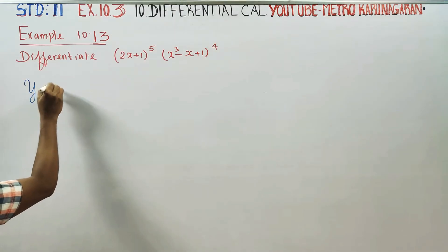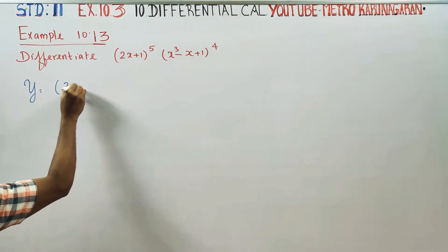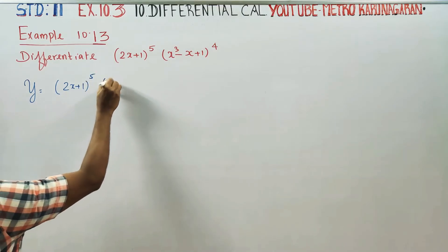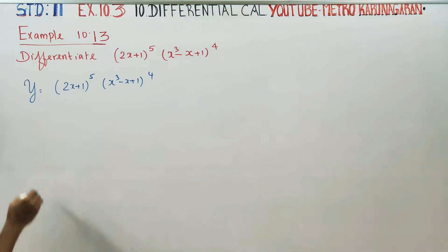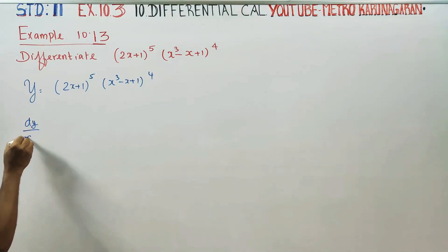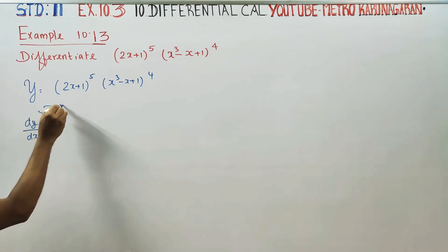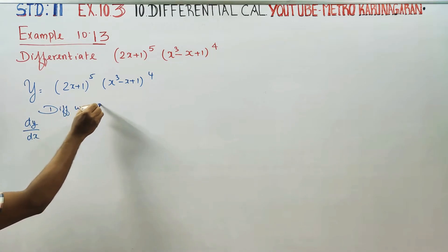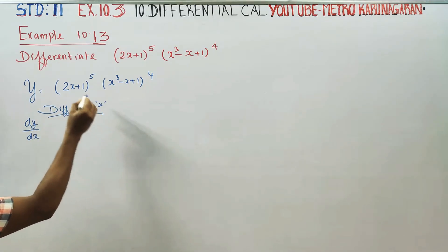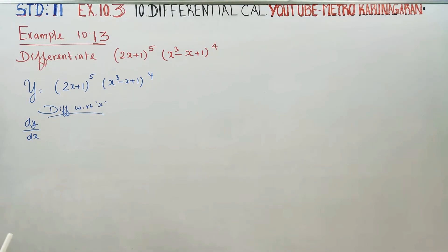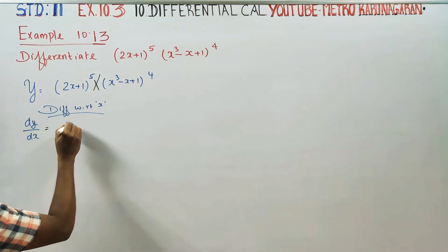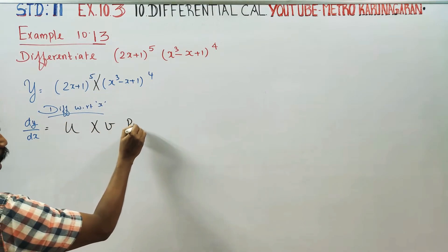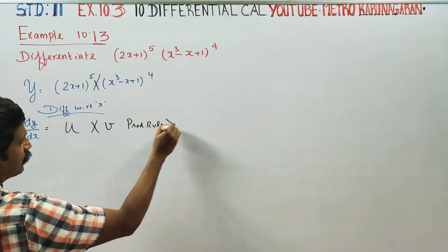Let us name it: y is equal to (2x plus 1) whole power 5 times (x cube minus x plus 1) whole power 4. I want dy by dx — we have to differentiate. Since there is multiplication in the middle, you have to use a rule called the product rule.